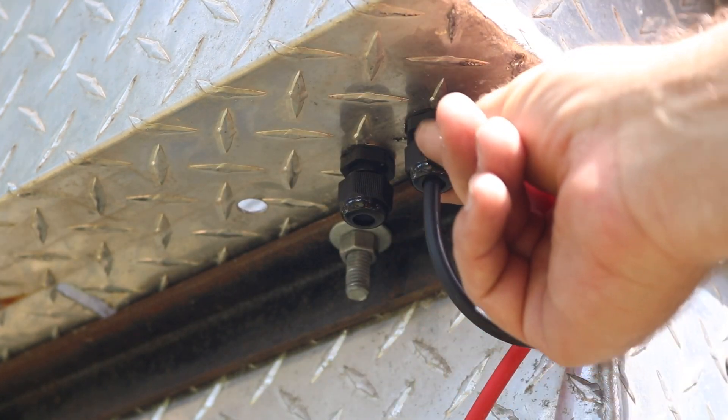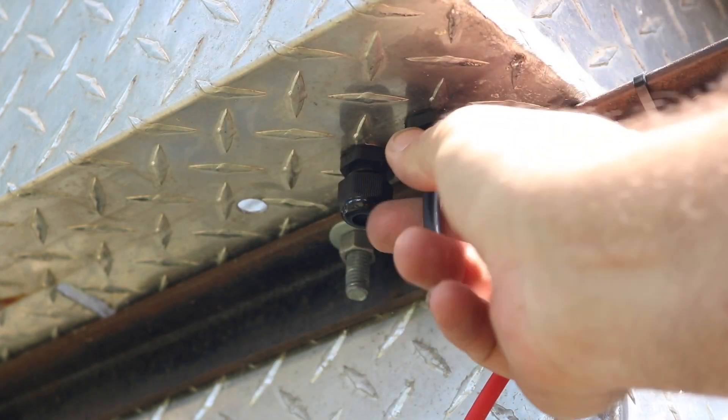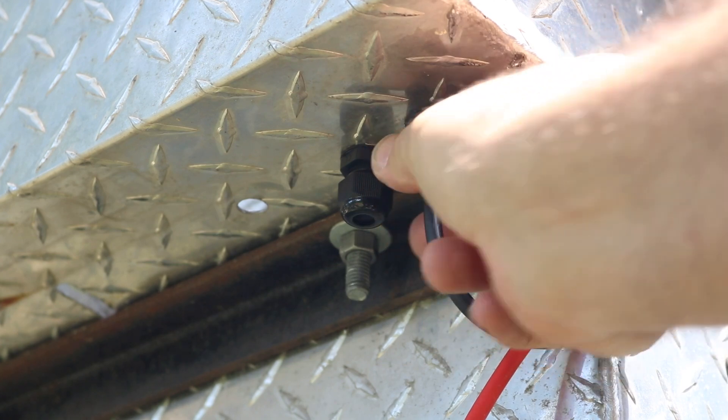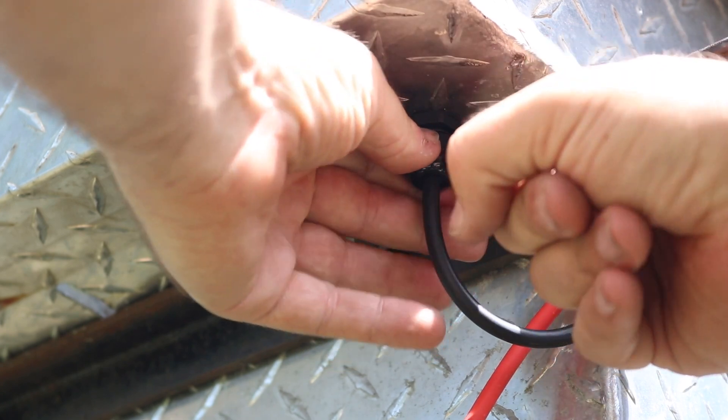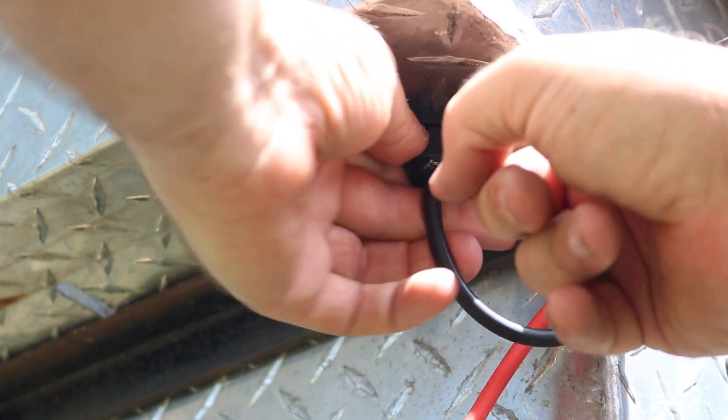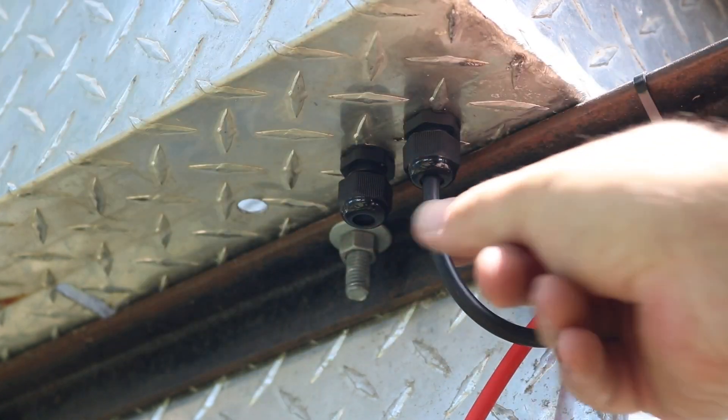Once I've gotten that black wire in there where I want it, make sure I got enough wire on the other side, then I just tighten this down and that squeezes onto the cable. It's waterproof and it makes a strain relief. And of course we're up under the truck box so this will be very weatherproof and it holds on tight to the wire.